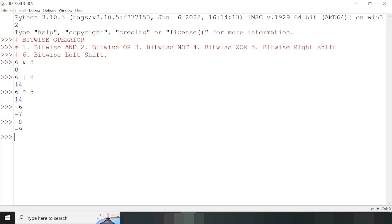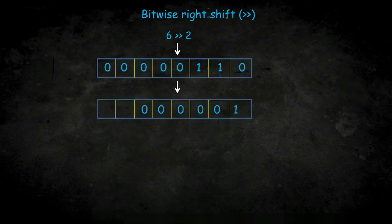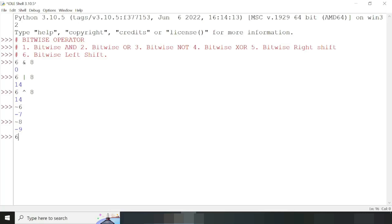Our next bitwise operator is bitwise right shift. We have the number six and its binary representation. Right shifting six by two bits means the last two bits are deleted, two new empty blocks are created on the left side, and they are filled with the sign bit — which is zero in our case. We then calculate the decimal equivalent, which gives one. Practically, we write six, then the right shift operator, then two, and the answer is one.